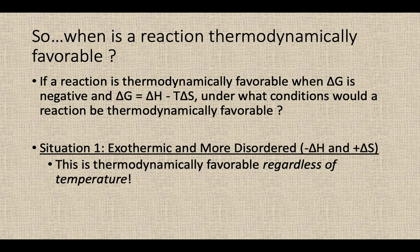It's going to be thermodynamically favorable regardless of temperature. Because if delta H is negative, no matter what temperature you put in for T — and remember we're using the Kelvin scale, so there are no negative temperatures possible — T is always going to be positive. So if you're taking a negative delta H minus T times a positive delta S, you're subtracting a positive number. Negative minus positive gives you a negative delta G no matter what.